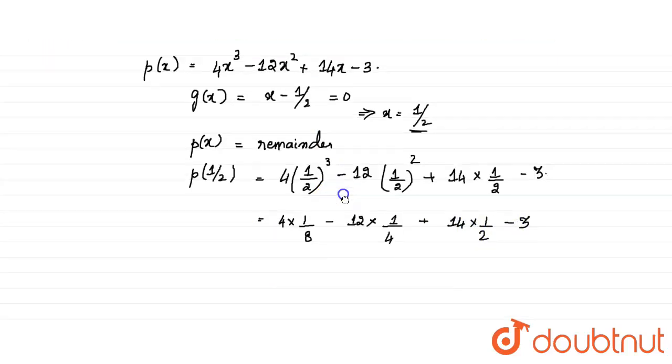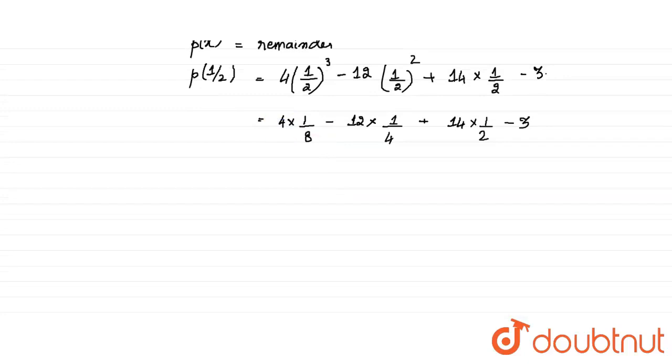4 ones of 4, 3s of 12 and 2 ones of 2, 7s of 14. So we have 1 by 2 minus 3 plus 7 minus 3. Minus 3 and minus 3 is minus 6. Minus 6 plus 7 is plus 1. 1 by 2 plus 1 is nothing but 3 by 2. So the remainder for this function is 3 by 2.